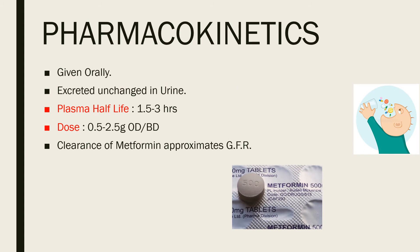Pharmacokinetics of metformin: it is given orally and is mostly excreted unchanged in the urine. It is avoided in patients with renal insufficiency. The plasma half-life is 1.5 to 3 hours. A dose of 0.5 to 2.5 grams is given once or twice daily. Clearance of metformin approximates the glomerular filtration rate (GFR), and it accumulates in renal failure, thus increasing the risk of lactic acidosis.